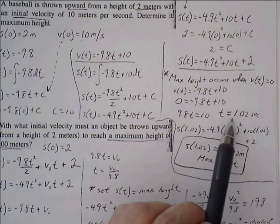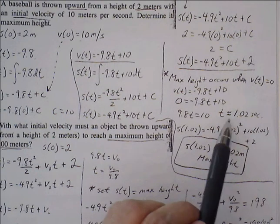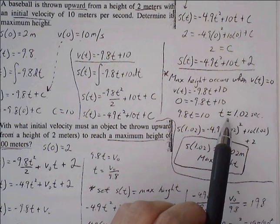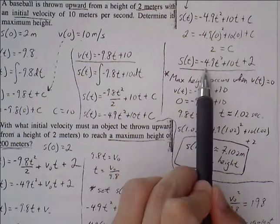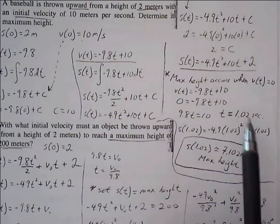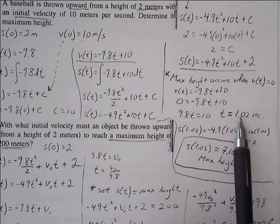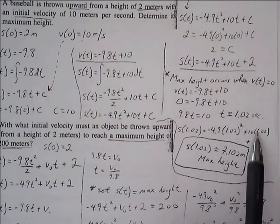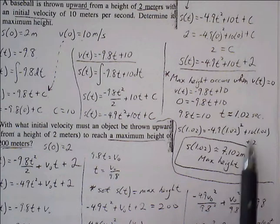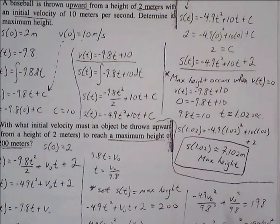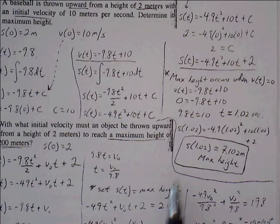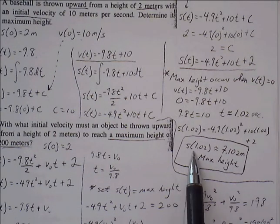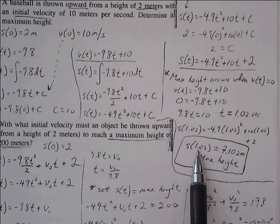It's going to take 1.02 seconds for the ball to reach its maximum height, but we still haven't found the maximum height. We still have to take the 1.02 and put it into the position function. We want to know how high off the ground the ball is at this moment in time. 1.02 gets plugged in for all the t's. Use our calculator to find the position at 1.02 seconds. The maximum height before the ball starts to go down is going to be 7.102 meters, which occurs 1.02 seconds after the ball is thrown.